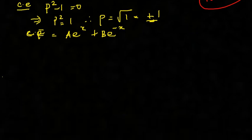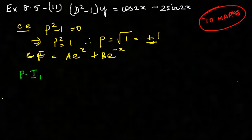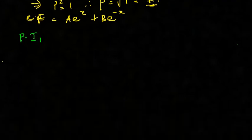So that is what is going to be slightly different. Particular integral 1 is going to be for cos 2x. So this is going to be 1/(D² - 1) into cos 2x.